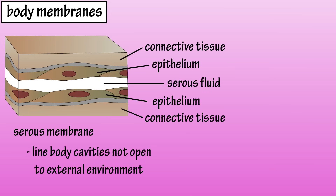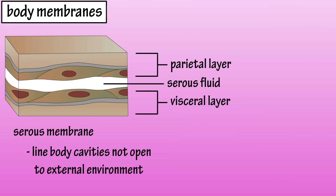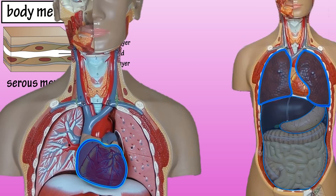Serous membranes line many of the body cavities that are not open to the external environment. Serous membranes are comprised of simple squamous epithelium and connective tissue, and they actually have two layers: a parietal layer and a visceral layer. In between these two layers is the serous cavity, which contains serous fluid. Serous membranes line the heart, lungs, and the abdominal cavity and abdominal organs, such as the stomach.